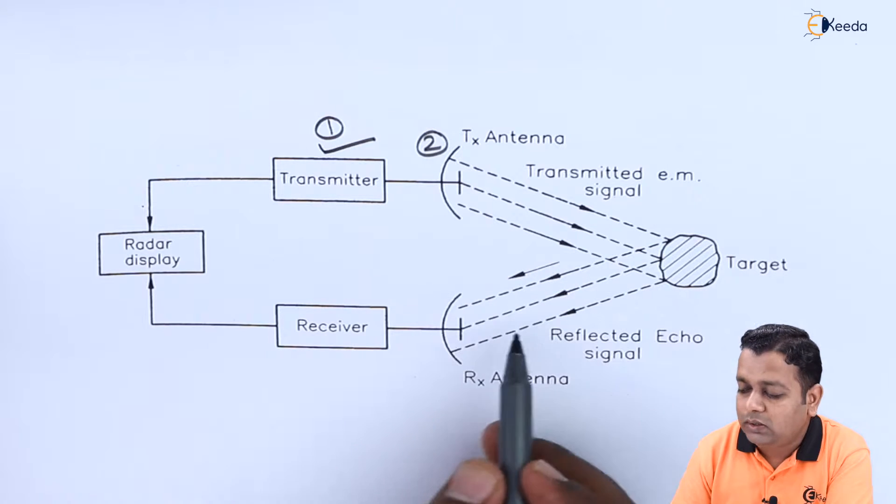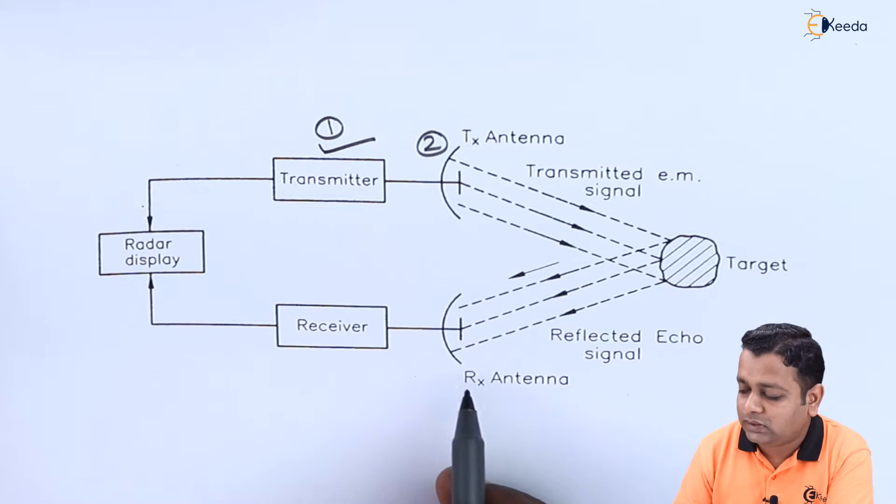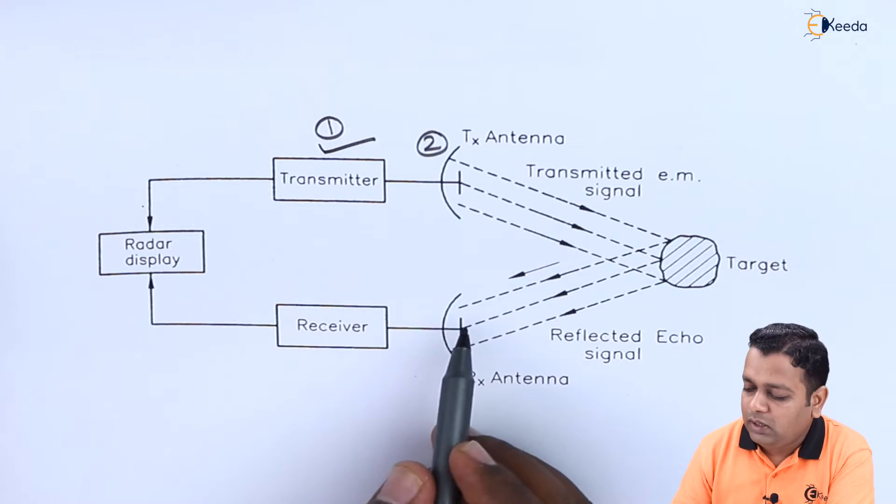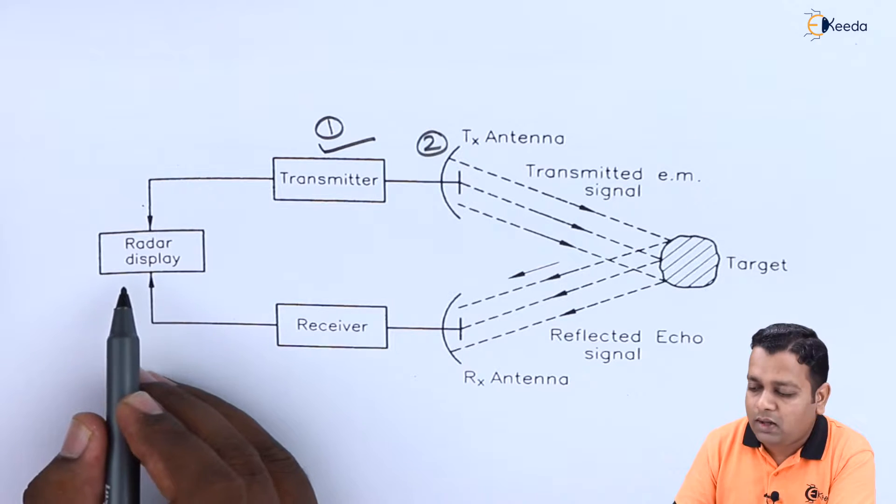There will be reflection of the waves from it. Here there is the use of another antenna in this simple radar system that is called the receiving antenna.